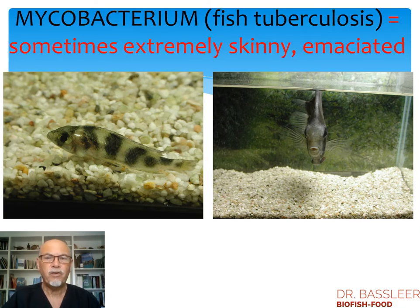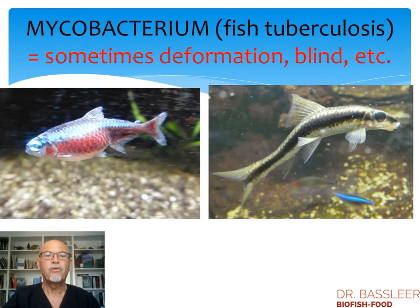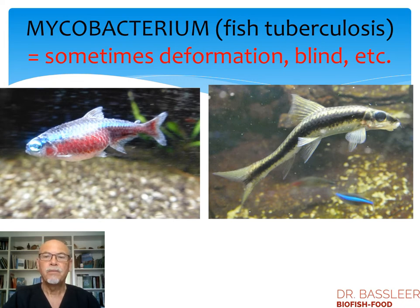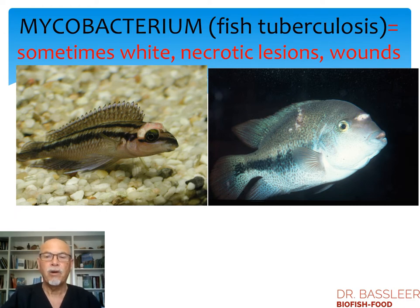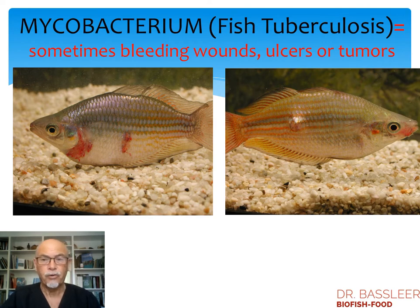It can also be extreme skinny or emaciated fish, like this Malawi cichlid or this discus here, razor blade looking, caused by fish tuberculosis. Or this deformed cardinal tetra with blind eyes and deformed crossagelus — old fish getting deformation caused by mycobacterium. Or sometimes white necrotic lesions and wounds on these two cichlids, on the head of the cromies, and necrotic lesions on this Central American cichlid. Sometimes bleeding wounds, ulcers or tumors, like on this rainbow fish — all different symptoms of mycobacterium.